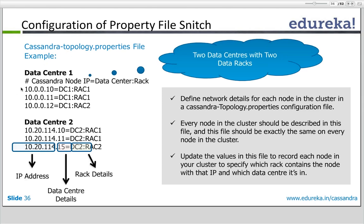DC two is the data center detail and rack two is the rack detail. You have to define the network details for each node in the cluster in cassandra-topology.properties. This file should be the same across all nodes — it shouldn't happen that the contents differ from one node to another.